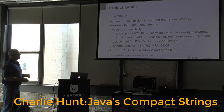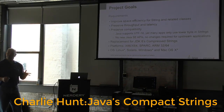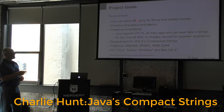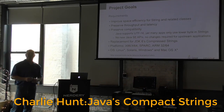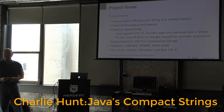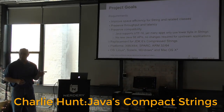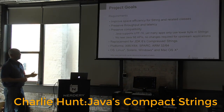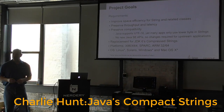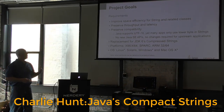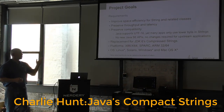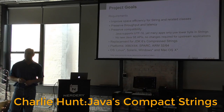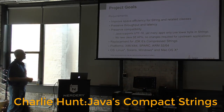The project goals were to improve space efficiency of String and related classes like StringBuilder and StringBuffer, preserve throughput and latency, and preserve compatibility. Java supports UTF-16, but many apps only use one byte out of the two bytes per character. We also wanted to avoid introducing any new Java SE APIs, since that requires a JSR and the JCP process, which is a much longer, slower turnaround.